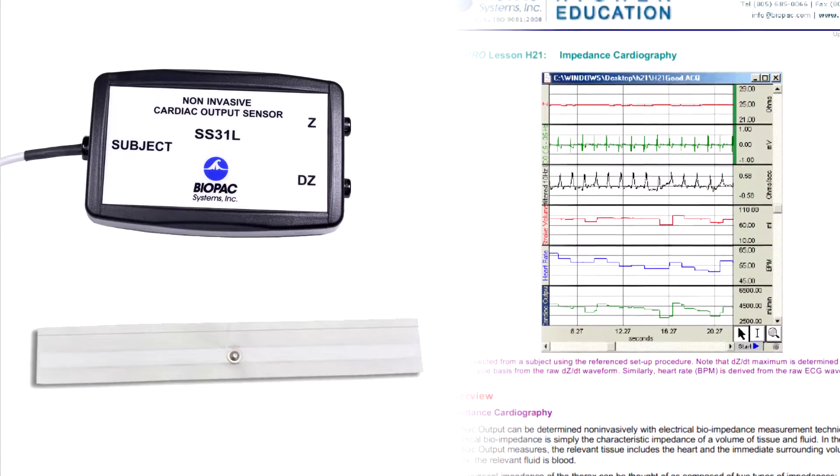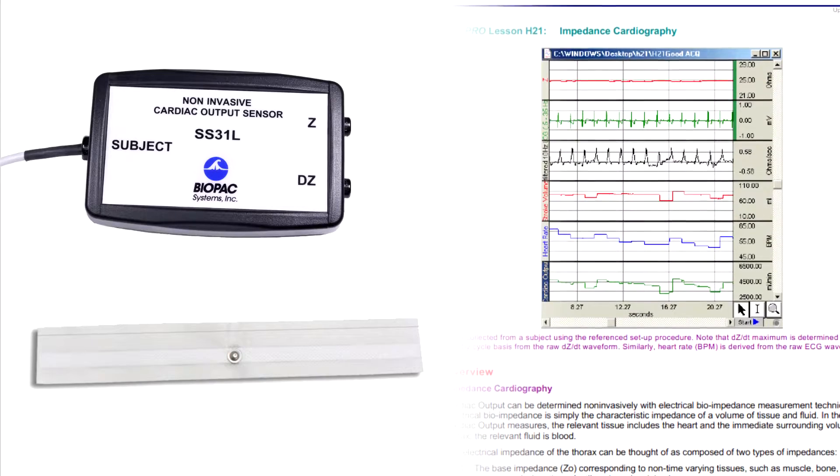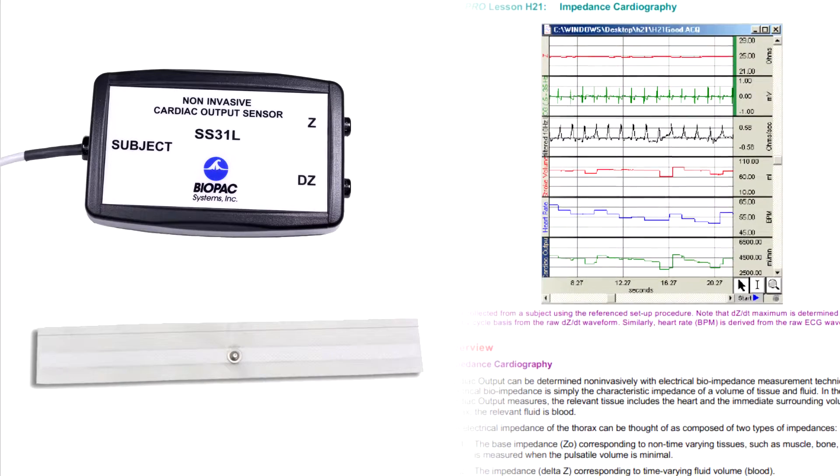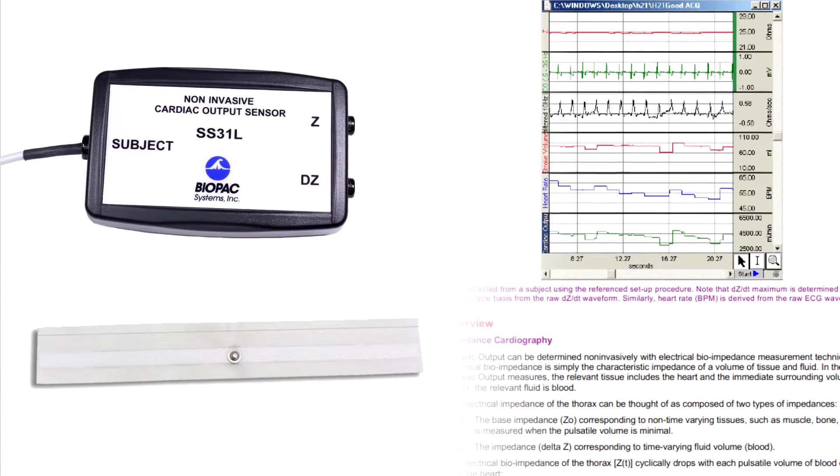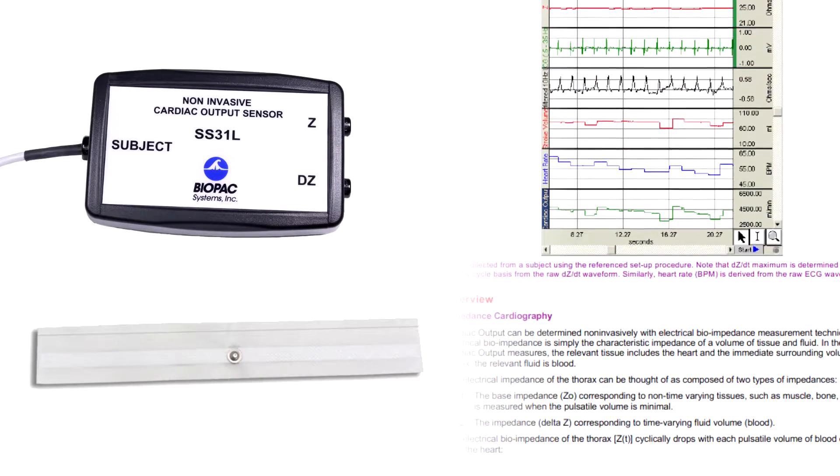The optional transducer accessory pack can be added to expand your system with hardware and lessons. This TA pack includes cardiac output sensor with bioimpedance strip electrodes.